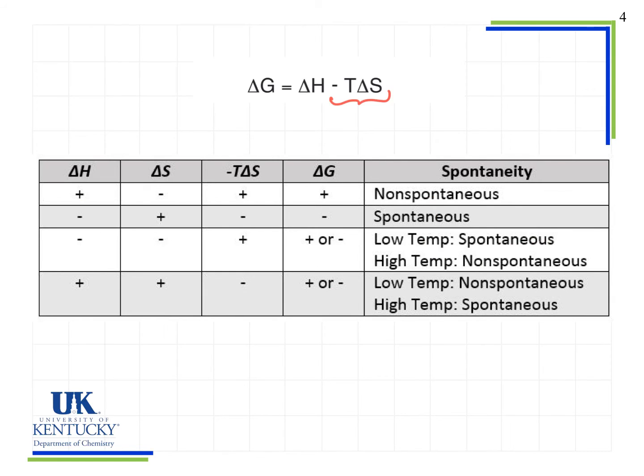At low temperatures, we see that the minus T delta S term is smaller in magnitude than the delta H term. Because if we have a low temperature, T delta S will be small. And so we'll get a small minus T delta S. We will have a larger delta H leading to a positive delta G and a non-spontaneous reaction.